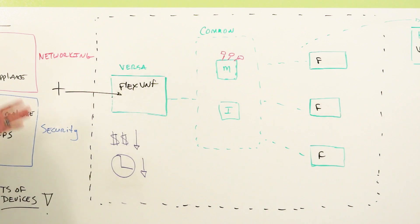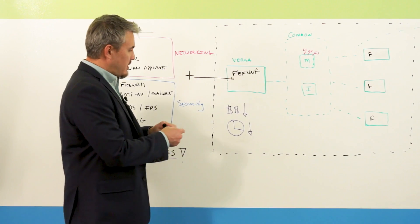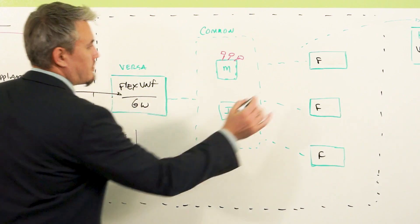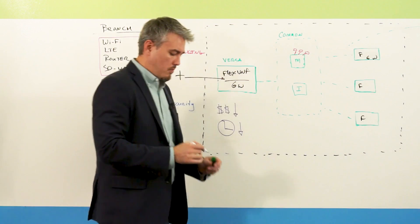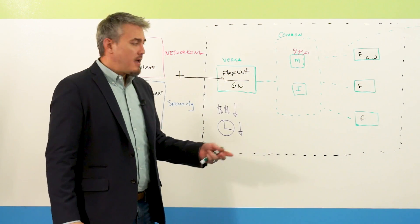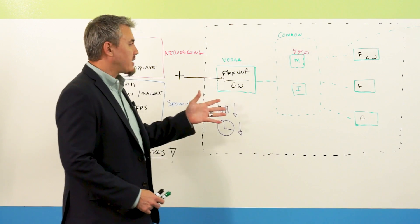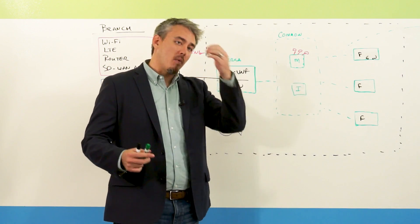In Versa, because of our deep networking as well as security capabilities, every single FlexVNF is a gateway. So I'll just draw it in two. And what that means is that each node is capable of interacting with non-SD-WAN sites.